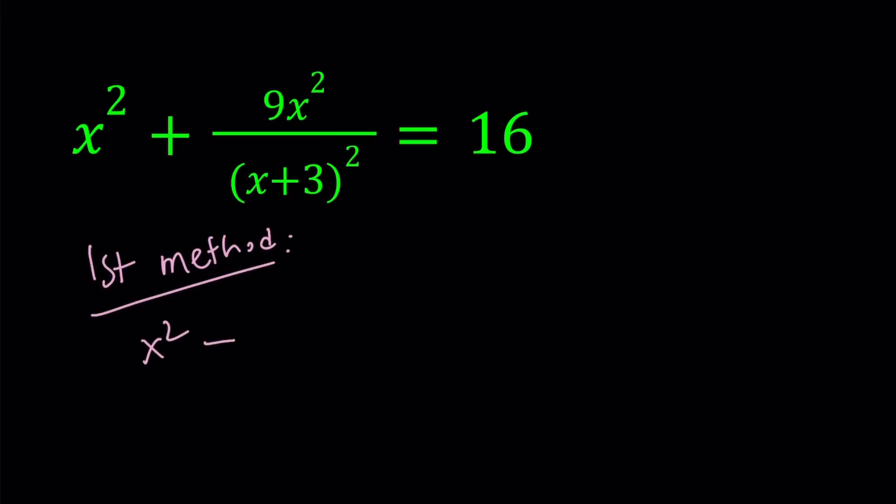So x squared plus and I'm going to write this as 3x over x plus 3 quantity squared. Now you can see better that this is a sum of two squares. But how do you complete the square? There is actually two ways to do it. So when you have a squared plus b squared, you can either add 2ab or you can subtract 2ab.